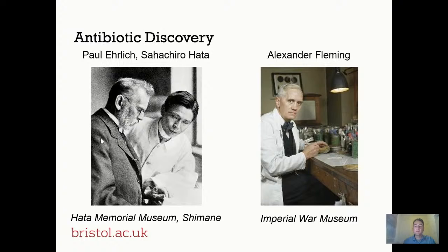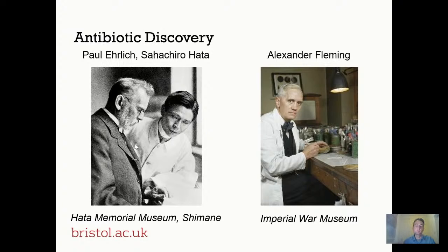The idea that it would be possible to identify an agent with selective toxicity against microbial pathogens, but with little or no effect on the human host, is one that goes back something more than a century. The forerunner was Paul Ehrlich, who turned the concept of what he called a magic bullet. This was inspired by discoveries at the end of the 19th century that, using dyes, it was possible to selectively label bacterial cells over eukaryotic equivalents. Ehrlich reasoned that it might be possible to extend that concept and instead identify agents with selective toxicity.